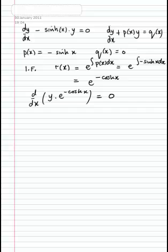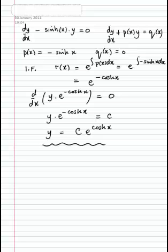If the derivative of this quantity in the brackets is zero, then the quantity in the brackets must be a constant, which we write as c. Then if we multiply both sides by e to the cosh(x), we'll get the solution y equals c times e to the cosh(x). That's the general solution of the differential equation.